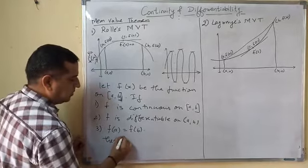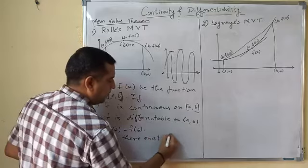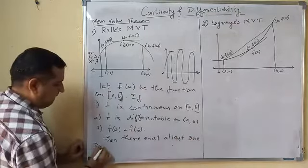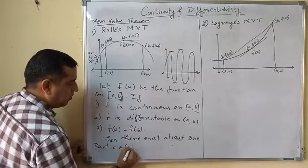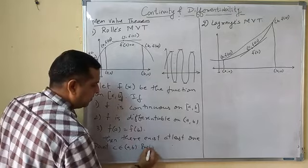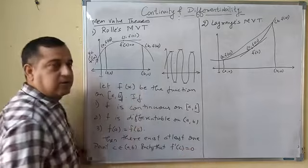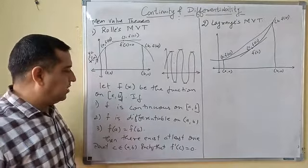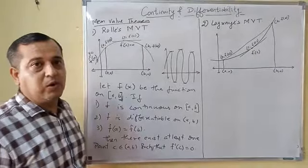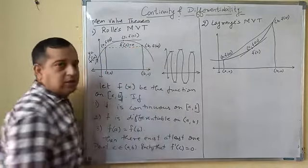Then the conclusion is, there exists at least one point c belonging to open interval (a,b) such that f'(c) is equal to 0. So if you notice here, f(a) and f(b) are equal.